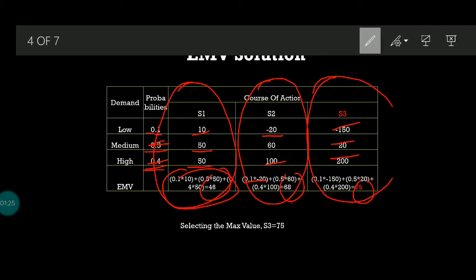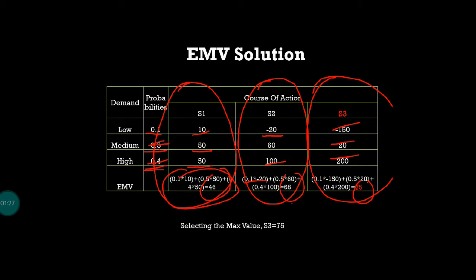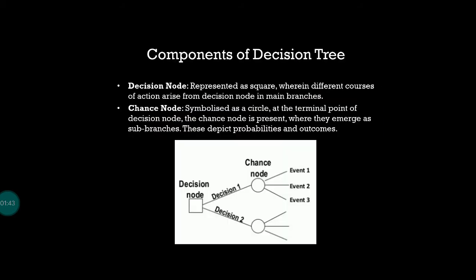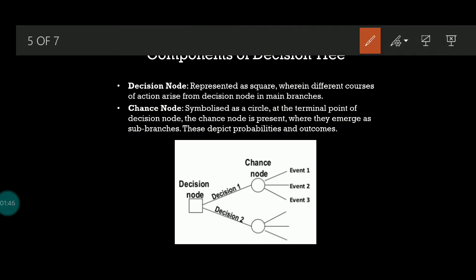You select the maximum value. This is the expected monetary value. The question here is to draw the decision tree. Since this is ready-made for us with the EMV solution, we will think of creating a decision tree.